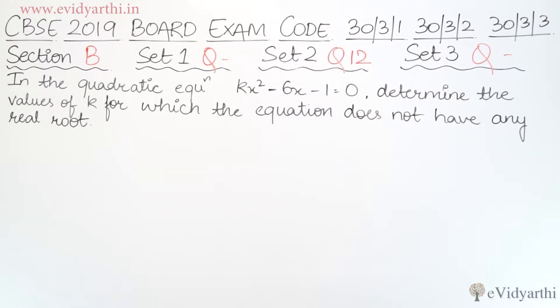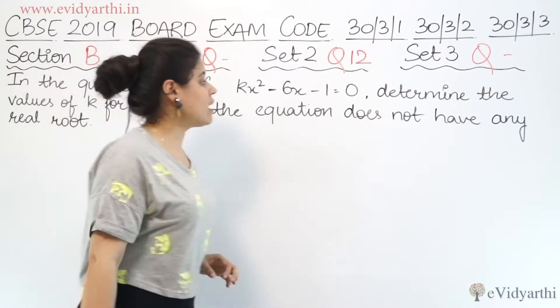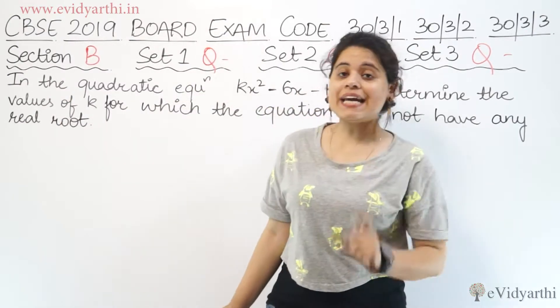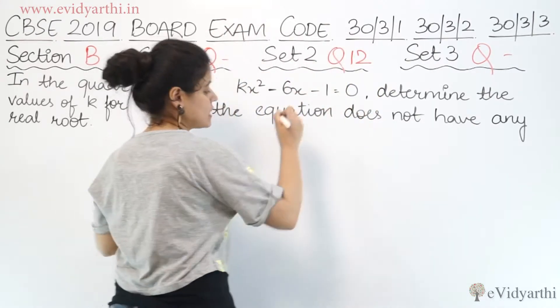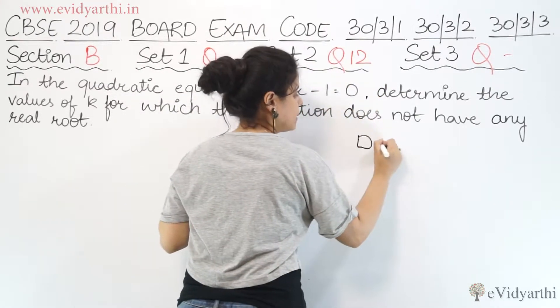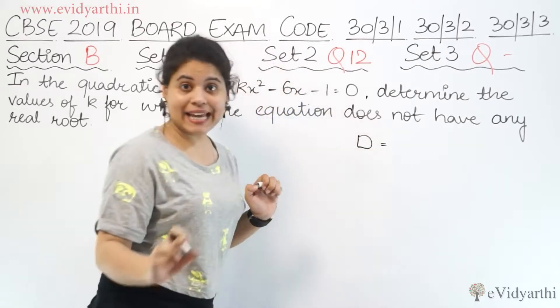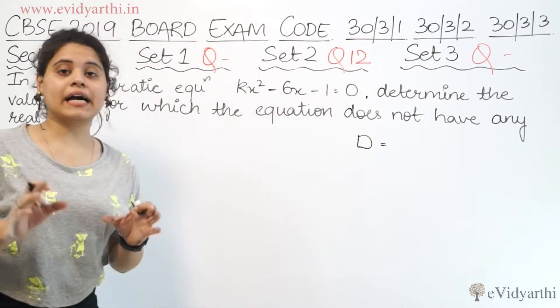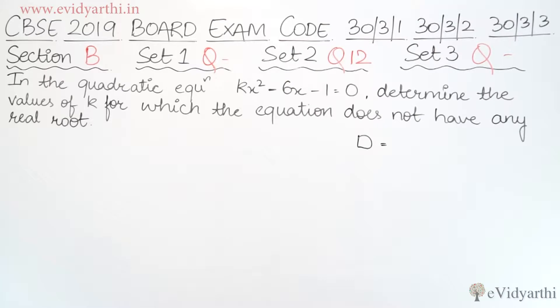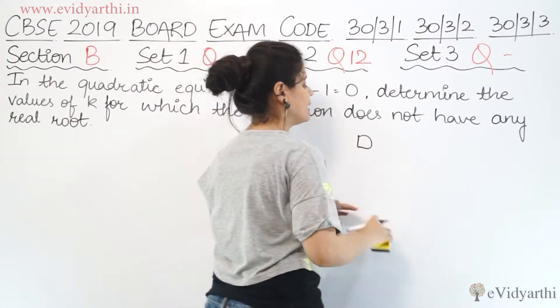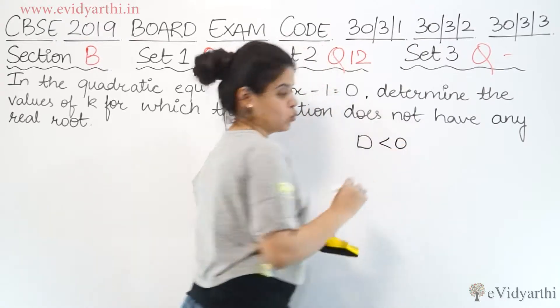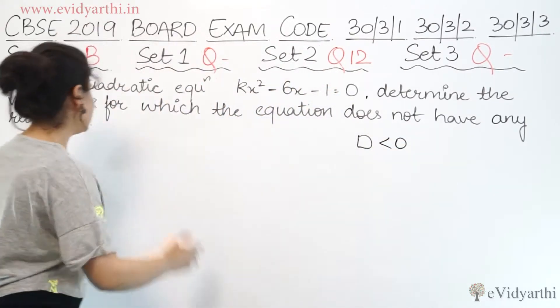So what do you do here? The equation is given and you need to find the k value such that there is no real root of this equation. So in that case, the discriminant will be less than 0. If you have no real root of any equation, that means that the discriminant will be less than 0. So we find the discriminant.